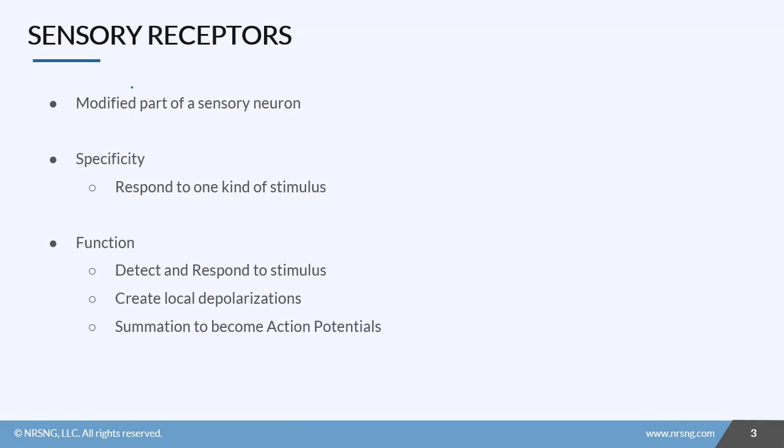So everything starts down in these sensory receptors. Now these are just modified parts of a little sensory neuron that are designed to receive and respond to a stimulus. Now with most sensory neurons, we actually see something called specificity. And that just means that these receptors are designed to detect and respond to one kind of specific stimulus.